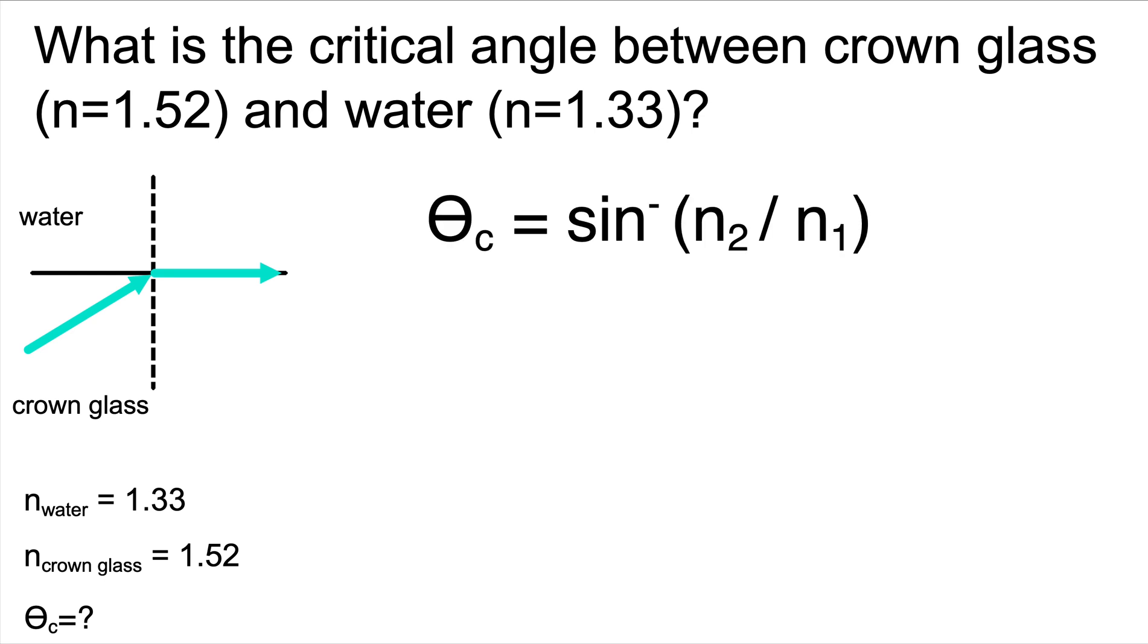Next, we'll write down the equation that we will use. You could just use the general version of Snell's law, but we will use the equation from our discussion. That was the critical angle is equal to the inverse sine of the quantity n₂ divided by n₁.